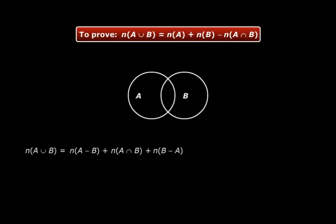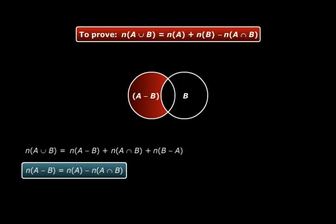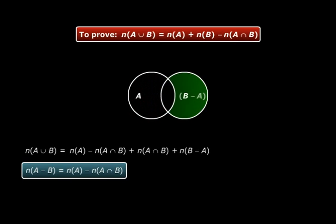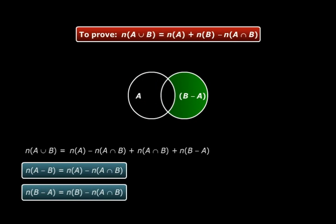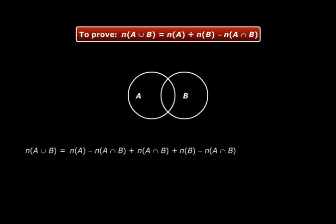Now go back to the Venn diagram. Look at A - B. We can say that n(A - B) = n(A) - n(A ∩ B), and we substitute this in the expression. Similarly for B - A. The n(A ∩ B) terms cancel out, and what we are left with is n(A ∪ B) = n(A) + n(B) - n(A ∩ B).